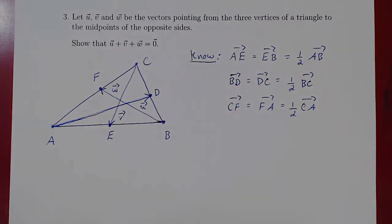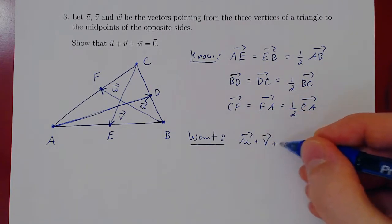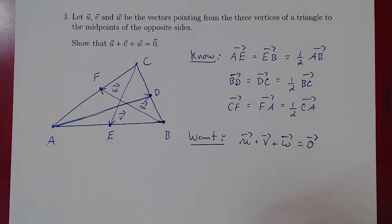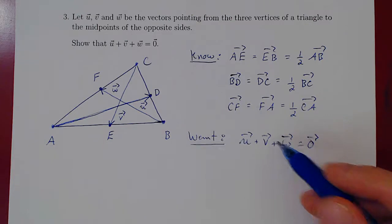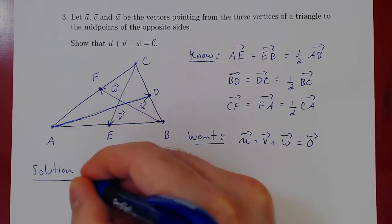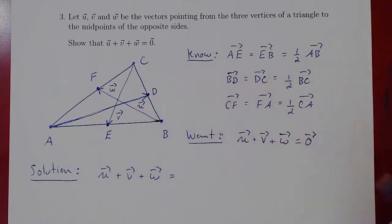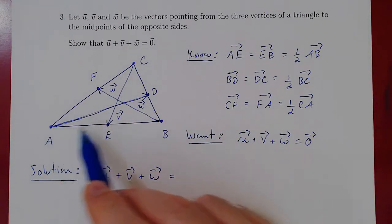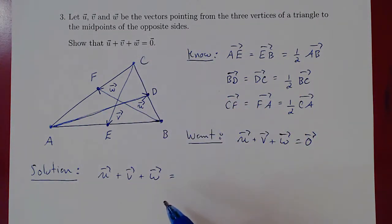We want to show that the sum U plus V plus W is indeed the zero vector. As always, we start from one side and get the other. It's more natural to take this sum and simplify to the zero vector. The idea is to walk along the outer perimeter of the triangle — if you walk one complete perimeter, you end up at the original point, giving the zero vector. Let's see if we can accomplish that, hitting the three midpoints.